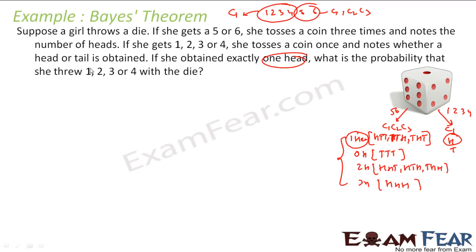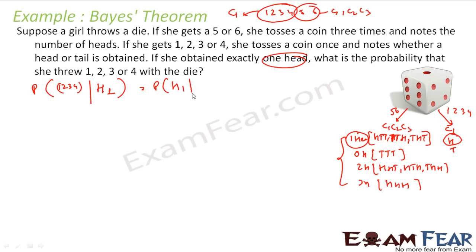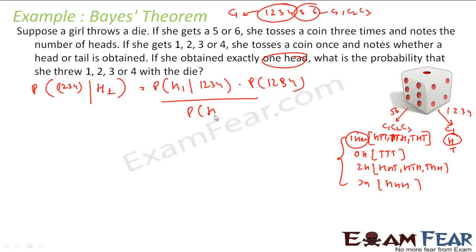What is the probability that she got exactly 1 head? We have to find the probability that the die showed 1, 2, 3, or 4. This is nothing but: probability of getting 1 head given die showed 1, 2, 3, or 4, multiplied by the probability of getting 1, 2, 3, or 4, divided by the total probability of getting exactly 1 head.